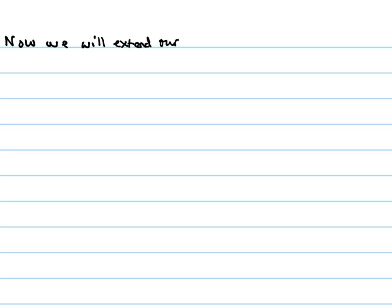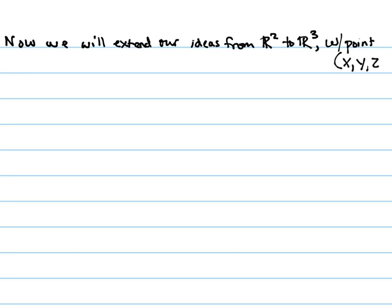So for starters, just a little bit of preemptive overview: we will extend our ideas from R2 to R3, and our points, just as you would expect, are labeled X, Y, and Z. To start with, we're just going to look at how to plot things.